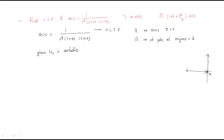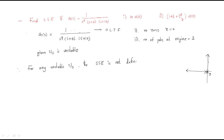There are no finite zeros and it has two poles at the origin, so the given system is unstable. For any unstable system, if you give any type of input, the steady-state error will be undefined — not defined.